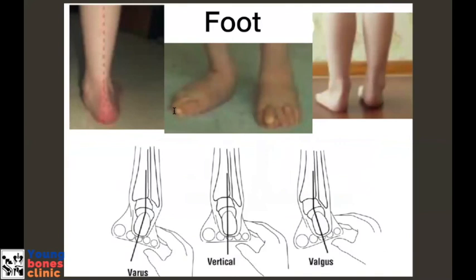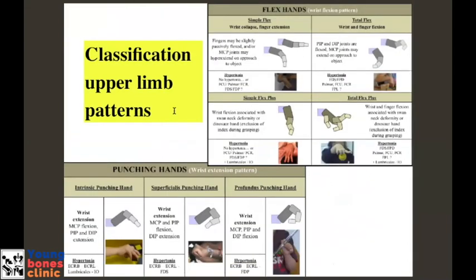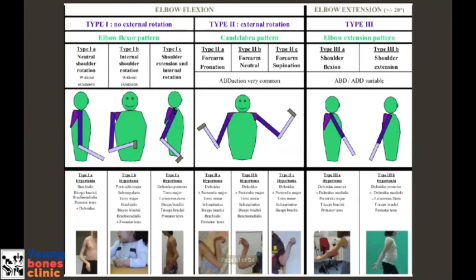As we examine the foot, we look for varus, valgus, and various other foot deformities. Upper limbs are also involved in cerebral palsy with various deformities: kids mostly have a flexion deformity at the elbow, the shoulder is in adduction, the forearm is pronated, the wrist is flexed, the thumb is in adduction in the palm, and the fingers are flexed. These common upper limb deformities usually respond to various therapies including botox, stretching, splinting, or sometimes tendon transfers.